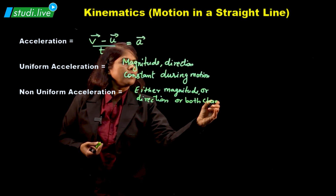Next is uniform acceleration. The word uniform means constant. Here the magnitude as well as direction — since acceleration is a vector quantity — should both be constant during motion. So remember: uniform acceleration means magnitude as well as direction should be constant during motion.